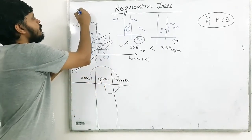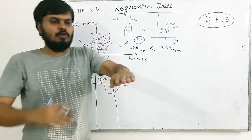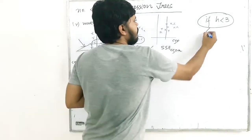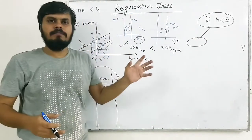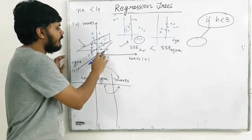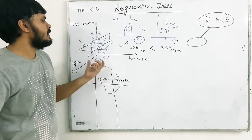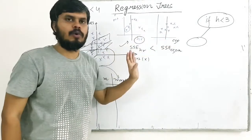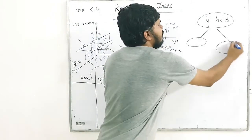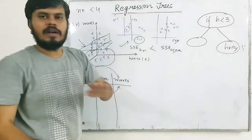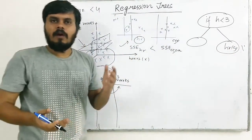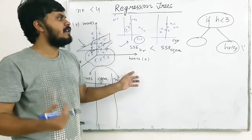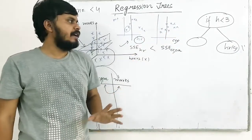After making the first cut — say hours < 3 — a plane cuts through all the data: some points go above, some go below. Then again apply the same criteria: if fewer than 4 points are in a group, stop and predict the mean. If more than 4 points remain, repeat the competition between hours and CGPA for the next node, make more cuts, and continue until you have 4 or fewer points remaining.